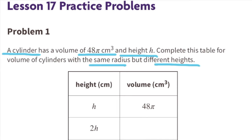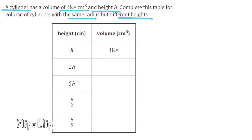Problem number one. A cylinder has a volume of 48π centimeters cubed and a height h. Complete this table for volume of cylinders with the same radius but different heights. The table has a left-hand column with height in centimeters and a right-hand column of volume in centimeters cubed. The table starts out on the top with one h, or one centimeter, and the volume is 48π centimeters cubed.